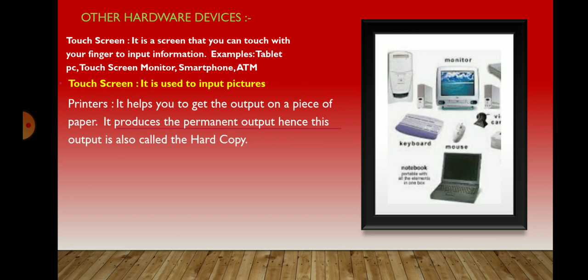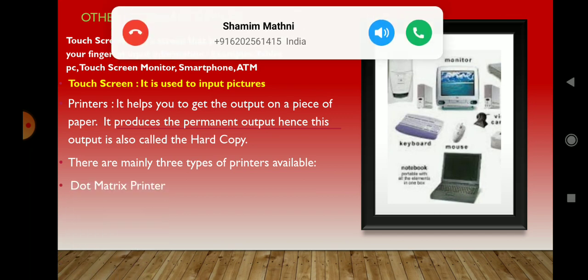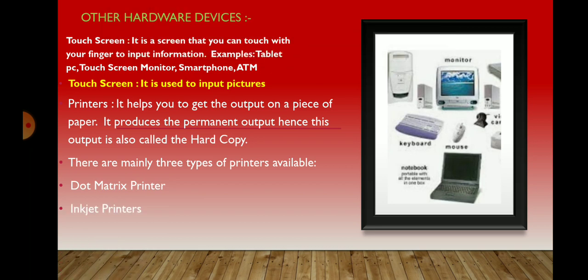Next is printer. Printer is a very common output device. This device helps you to take output on paper. The output obtained on paper with the help of a printer is called a hard copy. This hard copy is sometimes also known as a permanent copy. These days, three different types of printers are available in the market: dot matrix printer, inkjet printer, and laser printer.